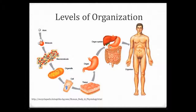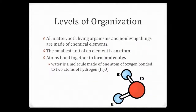So let's look at the smallest thing that we can study and move up from there. Everything, whether it's a living organism or a nonliving organism, is made out of elements. The smallest unit of an element is an atom. When we put atoms together, we form molecules. The picture here is a molecule of water — there are two little blue balls representing hydrogens and a larger red ball representing the oxygen. So two atoms of hydrogen and one atom of oxygen, bonded together, give us a molecule of water, written chemically as H₂O.